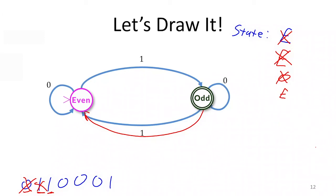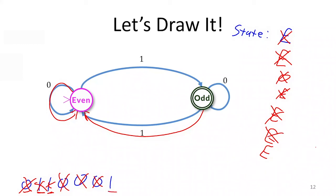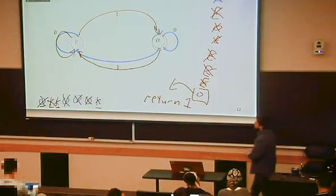We then see zeros, staying in even each time. Finally, we take the last transition to odd. We've read all of the characters. We ask: was I in a final state or a non-final state? Since the odd state is double-circled, it was a final state, so we return one. We can verify: there were three ones in the string, so the XOR of that string should be one. The automaton gave us the correct answer.